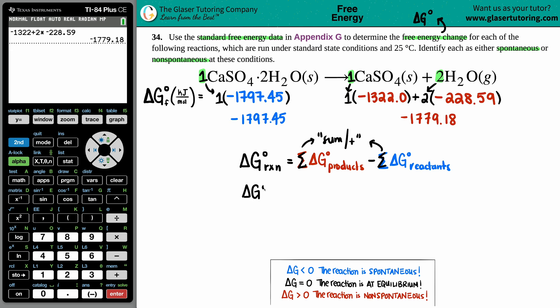So I have ΔG for the whole reaction equals negative 1779.18 minus the reactants, which is negative 1797.45. Minus a negative is plus a positive, but you can write this into the calculator and it will understand. I'm going to press Enter: minus negative 1797.45. There we go—we get 18.27.